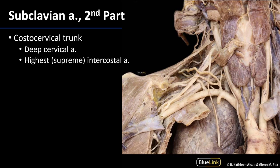With the anterior scalene muscle removed from the first rib and reflected upward, we can see the second part of the subclavian artery and its only branch: the costocervical trunk (costa = rib, cervical = neck). This trunk supplies two regions via two major branches. The deep cervical artery supplies some of the deep neck muscles with blood, and the highest — or supreme — intercostal artery supplies the first and second intercostal spaces, the spaces between the ribs, with blood.